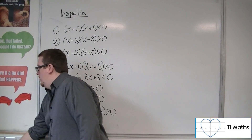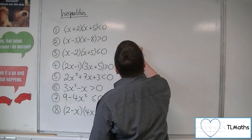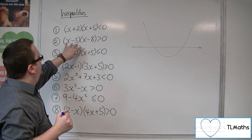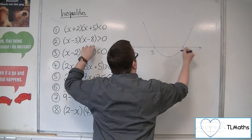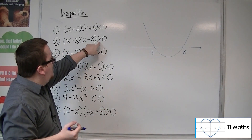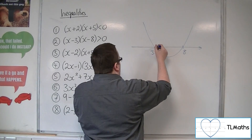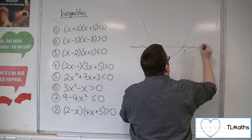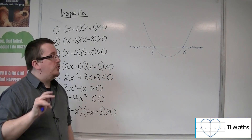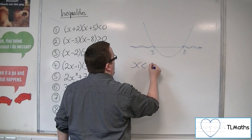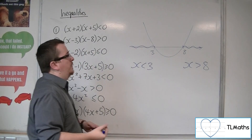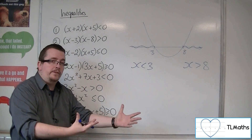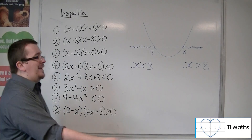Number 2: (x−3)(x−8) > 0. We sketch a positive parabola going through 3 and 8. We're asked where the parabola is above the x-axis — it's above it here and there, giving two distinct regions. So there are two distinct inequalities. Two regions, two inequalities. Three regions, three inequalities. You should always have as many inequalities as you have regions.